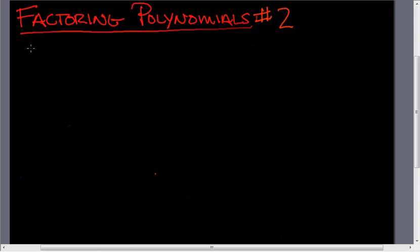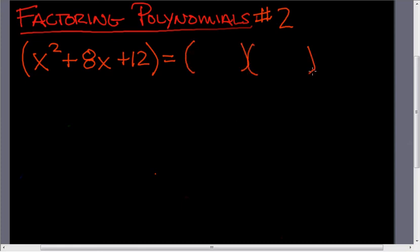Because this is factoring number 2, I'm going to ask you again, let's factor x squared plus 8x plus 12. I want to know what are the two original parentheses that made x squared plus 8x plus 12.